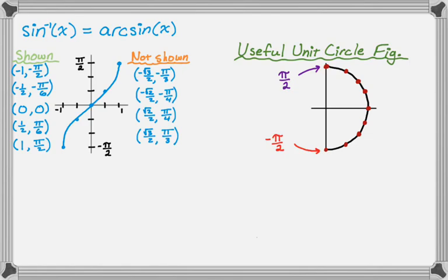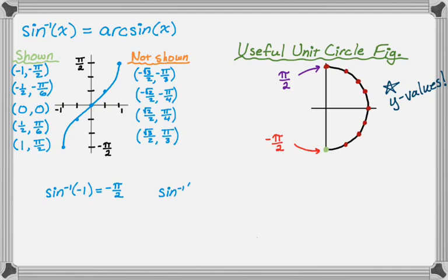When you use this figure, focus on the y values, because on the unit circle the ordered pairs are cosine, sine — so the y values are the sine of the angles. For example, inverse sine of negative 1 is negative pi over 2: look at the figure and think, what angle corresponds to a y value of negative 1? It's the point at the very bottom, negative pi over 2. Then inverse sine of negative radical 3 over 2 is negative pi over 3 — it's as close as you can get to negative 1 for a famous ratio without being negative 1, so it's the next point down.